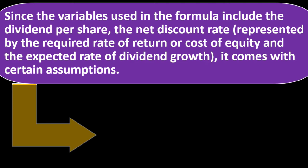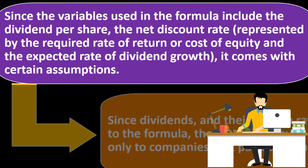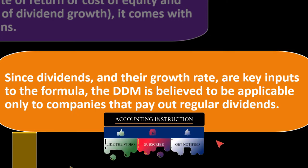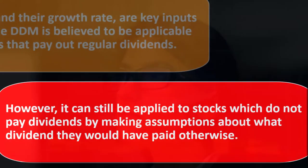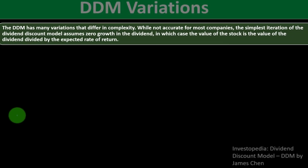The variables in the DDM formula include the dividend per share, the net discount rate (required rate of return or cost of equity), and the expected rate of dividend growth — and it comes with certain assumptions. The DDM is believed to be applicable only to companies that pay out regular dividends. If you're looking at growth stocks that don't pay dividends because they're reinvesting money, it's difficult to use this model, though it can still be applied by making assumptions about what dividends they would have paid.